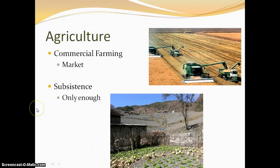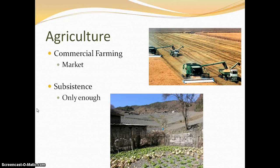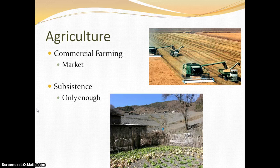Subsistence agriculture is characterized by only growing enough crops or raising enough animals to provide for the immediate family sustained by that particular farm. It is much smaller in scale, the technology is much less, people are living simpler lives, and we tend to find it in lower areas of development. Those are the two primary differences between commercial and subsistence agriculture. Agriculture itself is simply the intentional raising of crops or animals for consumption — that's really all agriculture is.